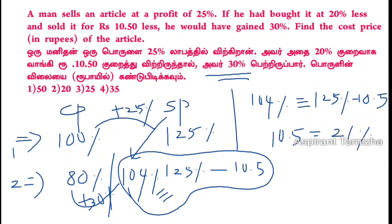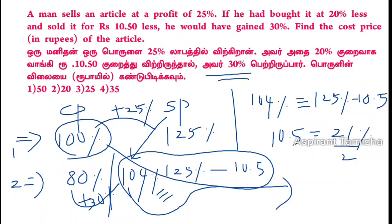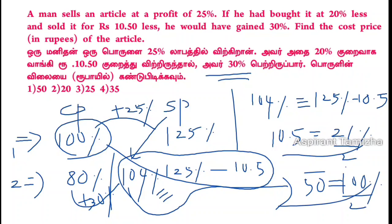Find the cost price of the article. 21% equals Rs. 10.5, so 100% equals Rs. 50. By 2 as the common factor: 21% is 10.5, so 100% of x is 50. That's what I told you — it's very easy to solve.